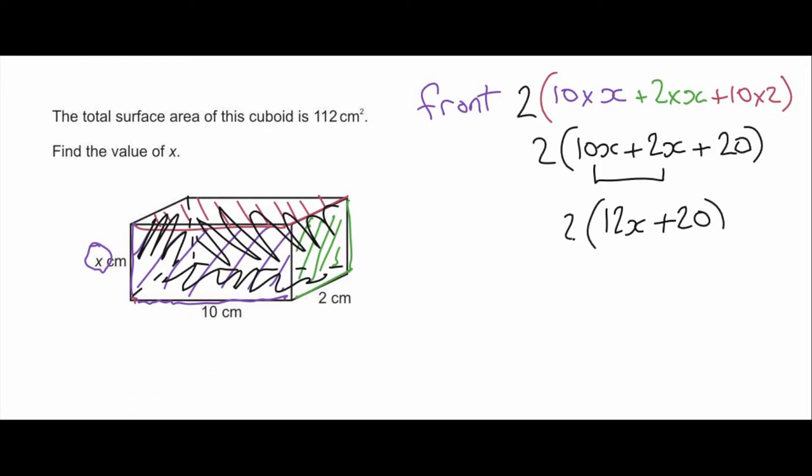And remember I can't add the 20 to the 12x. It's two different terms. There's no x variable there so I can't add it. So the last stage I can do is multiply out the 2 into the bracket. So 2 times 12x gives me 24x, and 2 times 20 gives me 40. Okay so now we've got an expression for the surface area of that cuboid.